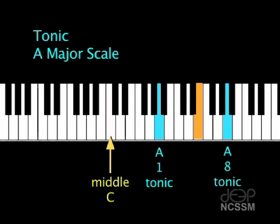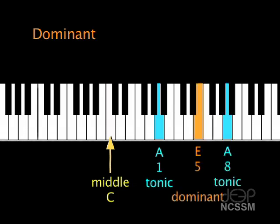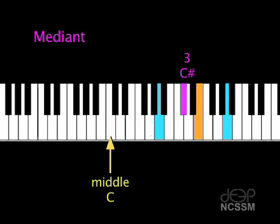The next note of importance is the fifth note of the scale. It is known as the dominant of the scale, and is generally considered to be the second most important note in the major scale. Next, we have the third note of the major scale. This note is known as the mediant, and it is the tone that makes a scale major.